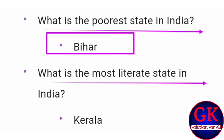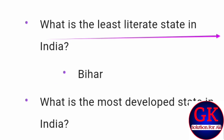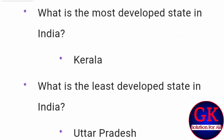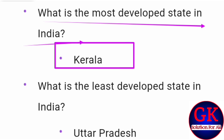What is the most literate state in India? Right answer: Kerala. What is the least literate state in India? Right answer: Bihar. What is the most developed state in India? Right answer: Kerala.